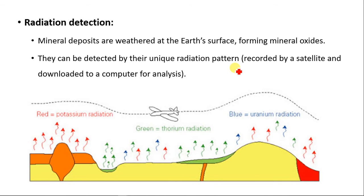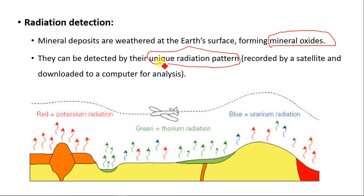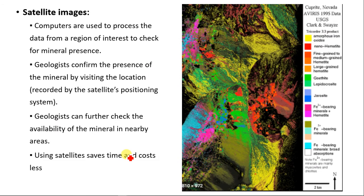Another method is radiation detection. Mineral deposits, when weathered or broken down at the earth's surface, form mineral oxides that can be detected by their unique radiation pattern. This radiation pattern can be recorded by a satellite and downloaded to a computer for analysis. For example, red represents potassium radiation, green represents thorium radiation, and blue represents uranium radiation. In this case, the major minerals identified are thorium and potassium, which are highly reactive metals.